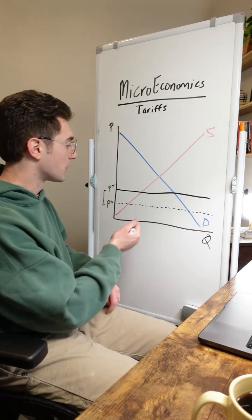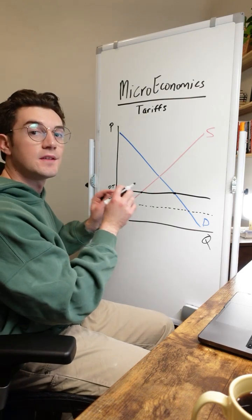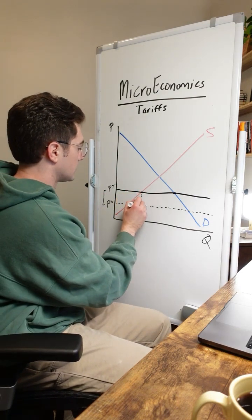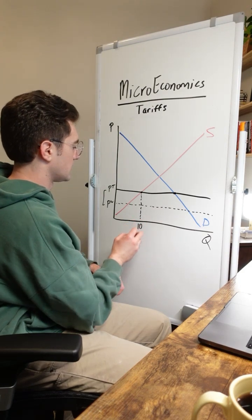From here, we can start to see the areas form. We're going to start with tariff revenue. In this economy now, domestic suppliers are going to supply this many units. We'll call it 10 units.